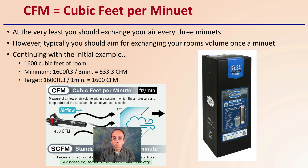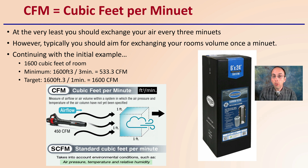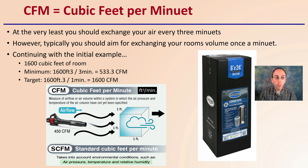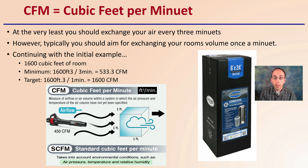CFM is cubic feet per minute, and a lot of times filters will list things in CFM. At the very least, you should exchange your air about every three minutes. However, you should really aim for exchanging your grow room's volume at least once a minute. Continuing with the example of that 1,600 cubic foot room: the minimum would be every three minutes, meaning you'd need a filter rated at least 533.3 CFM. However, you really want to be targeting something at 1,600 CFM.